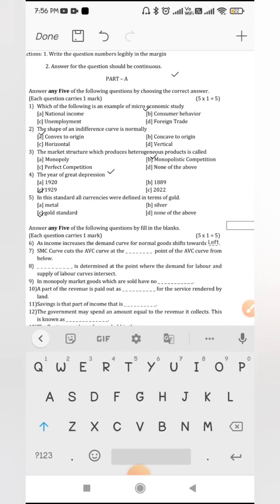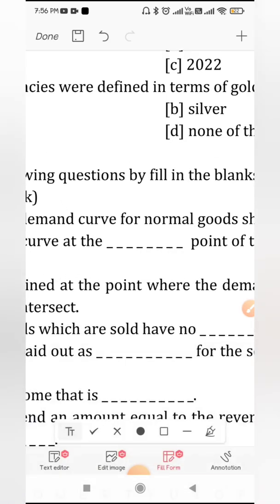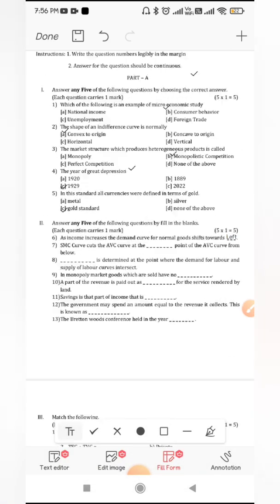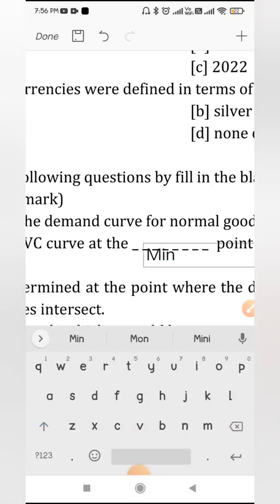SMC curve cuts the AVC curve at the minimum point. That minimum point is called as shutdown point also, but right now the answer here is minimum point.